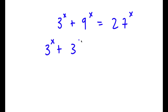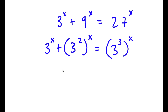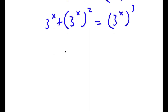Now I have 3 to the power of x plus 3 squared to the power of x equal to 27, which I'm going to rewrite as 3 to the power of 3. So that gives 3 to the power of 3x. Switching the exponent order, I now have 3 to the power of x plus 3 to the power of 2x is equal to 3 to the power of 3x.